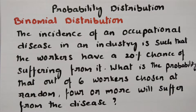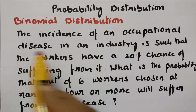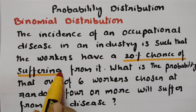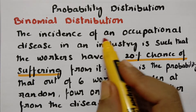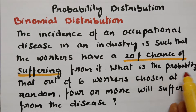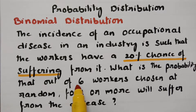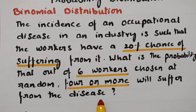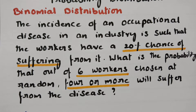Today's problem is from binomial distribution and is related to probability distribution. The incidence of an occupational disease in an industry is such that the workers have a 20% chance of suffering from it. What is the probability that out of 6 workers chosen at random, 4 or more will suffer from the disease?